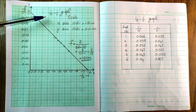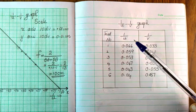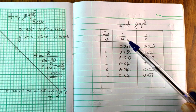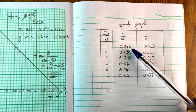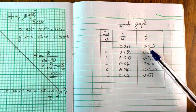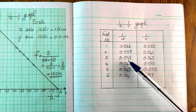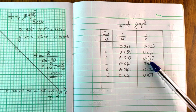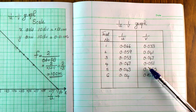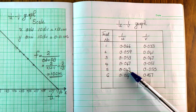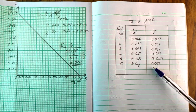Now we have the 1/U and 1/V graph. The reciprocal readings are: 1/U = 0.066, corresponding 1/V = 0.033; then 1/U = 0.059, 1/V = 0.041; then 1/U = 0.053, 1/V = 0.047; then 1/U = 0.047, 1/V = 0.051; then 1/U = 0.043, 1/V = 0.055; then 1/U = 0.04, 1/V = 0.057.